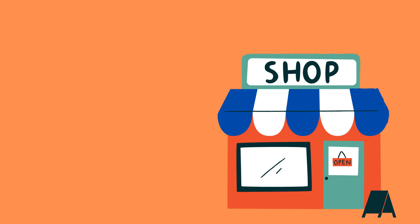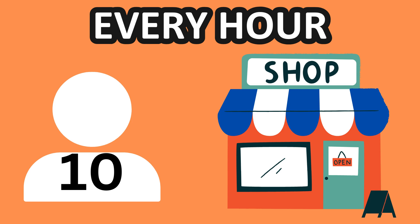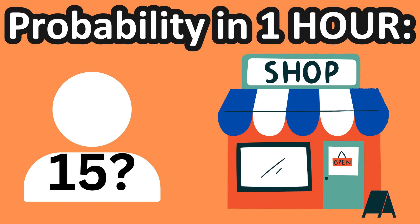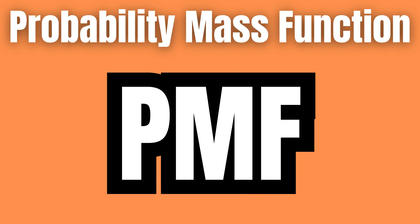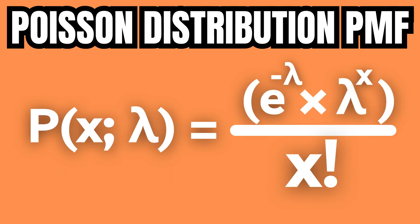Let's demonstrate this through an example. If a small store gains 10 customers on average every hour, what is the probability that it will get exactly 15 customers in a given hour? To answer this question we need to calculate the probability mass function, or PMF. The formula for the Poisson distribution PMF — that is to say, the probability that exactly a given number of events happen — can be written as this.